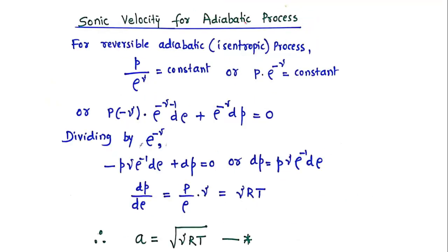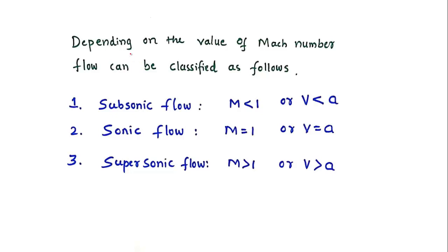For the sonic velocity in an adiabatic process, we use gamma (γ), the ratio of specific heats Cp/Cv. The derivation gives dp/dρ equals γRT, so the velocity of sound A equals the square root of γRT. We use this equation when the process is adiabatic. Depending upon the value of Mach number, flow can be classified as subsonic, sonic, or supersonic flow.